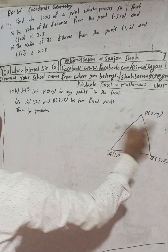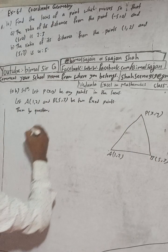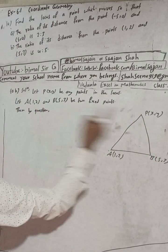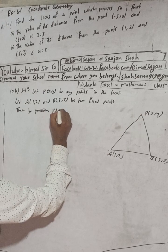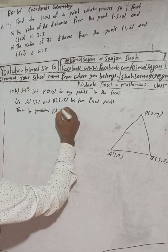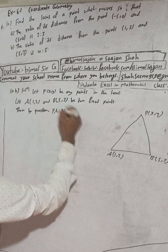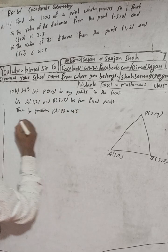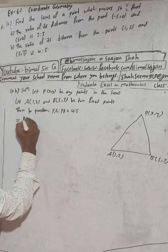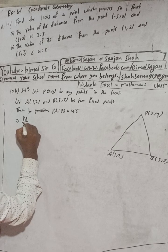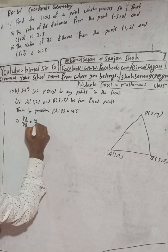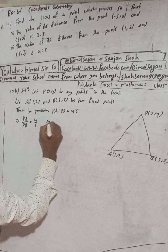That means PA:PB = 4:5. We can write the same equation as PA/PB = 4/5. Now squaring both sides.